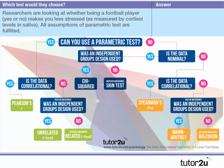Looking at one example: researchers are looking at whether being a football player (yes or no — two groups) makes you less stressed, as measured by cortisol levels in saliva. All assumptions of the parametric test are fulfilled. Using the decision tree: can we use a parametric test? Yes. Is it correlational? No — we have two different groups: football players and non-football players. Is it an independent measures design? Yes, which leads us to the answer: an unrelated t-test.